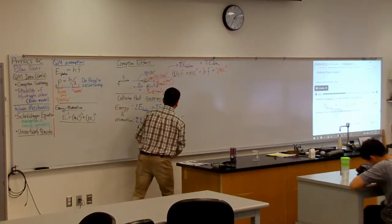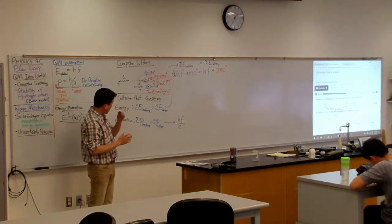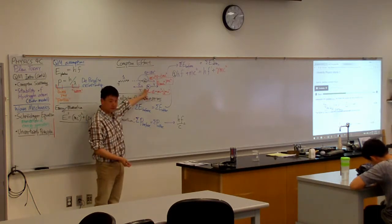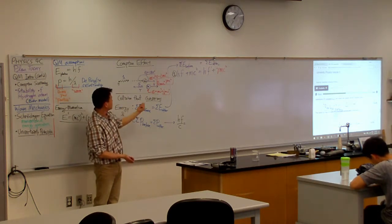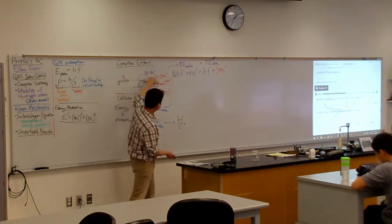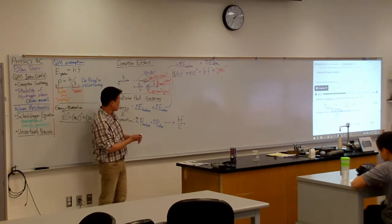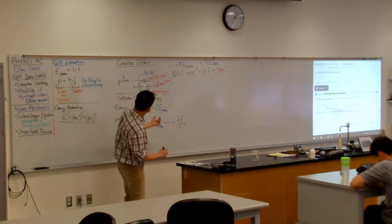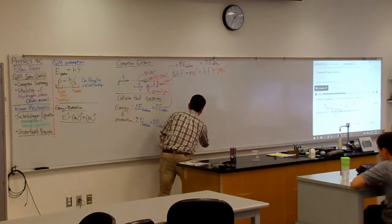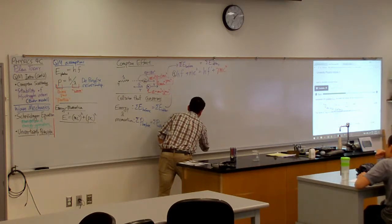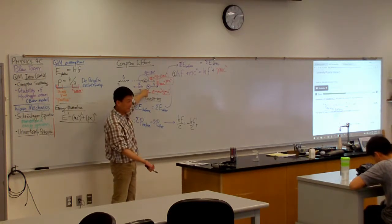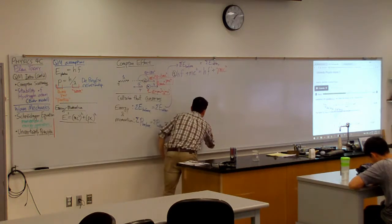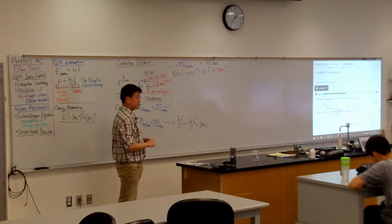In the after picture, the particle is going one way and the photon is bouncing back the other way, so I have to account for signs. It becomes: minus hf prime over c plus the momentum of the massive particle, which using the relativistically correct expression is gamma mv.